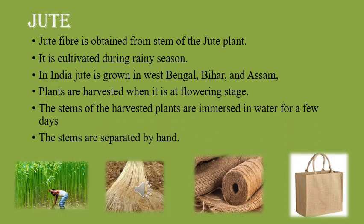Jute is cultivated to obtain jute fibers. It is cultivated during the rainy season. In India, jute is grown in West Bengal, Bihar, and Assam. Plants are harvested when at the flowering stage. The stems of the harvested plants are immersed in water for a few days. The stems are then separated by hand. The fibrous part is dried, tied in bundles, and sent to the factory. Jute fibers are long, rough, and coarse, but not very strong.